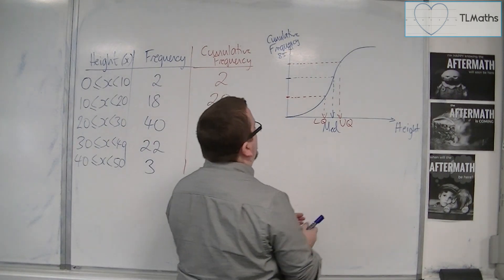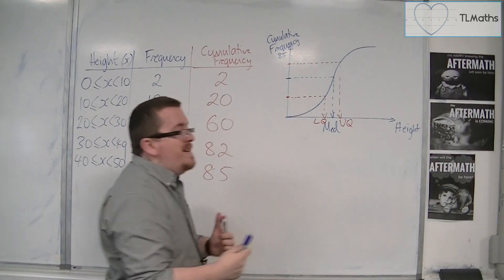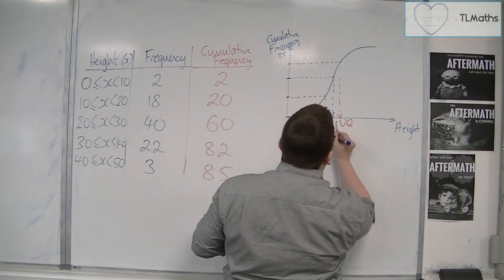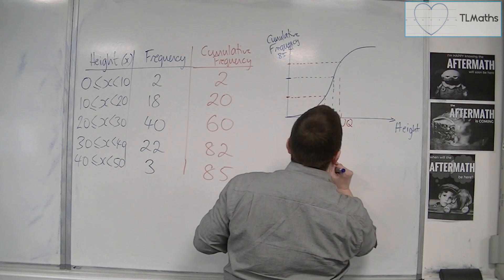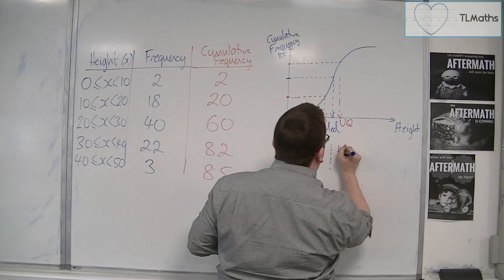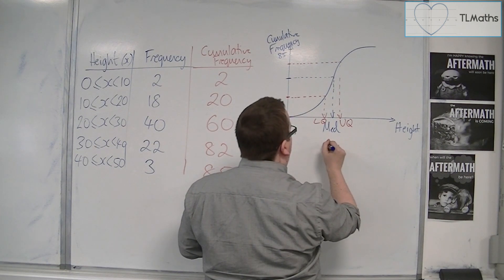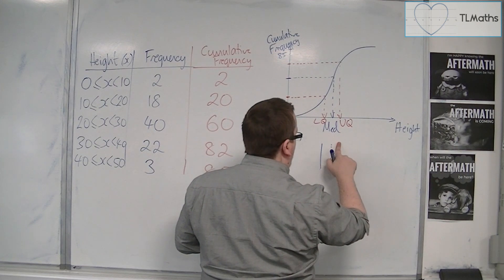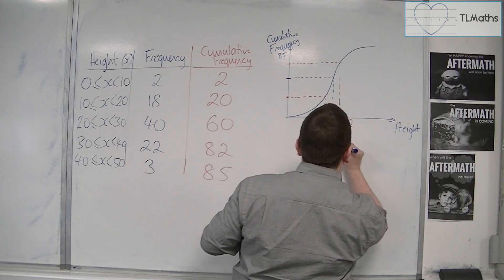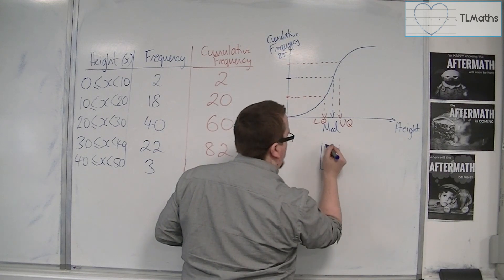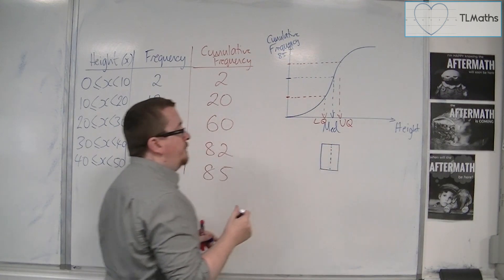And so you could effectively draw one immediately below your cumulative frequency graph. So, you would have the median, and then you would have the upper quartile, and you'd have the lower quartile. I haven't done this very well. I'll try and make that a straighter line. There we are. And we could put a box around that.